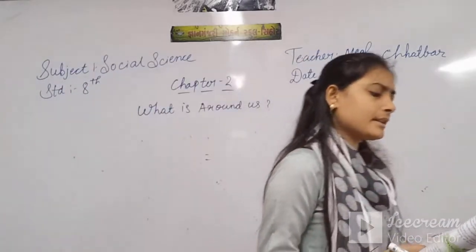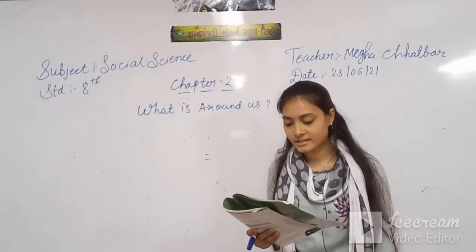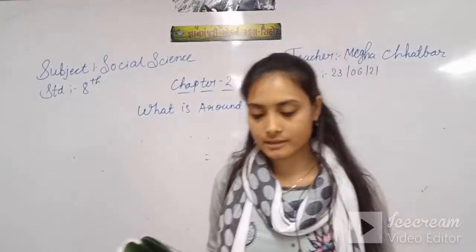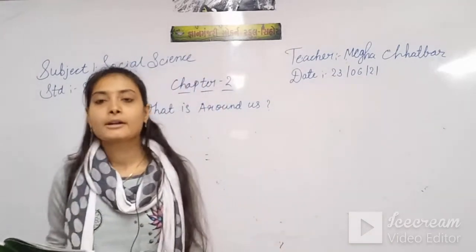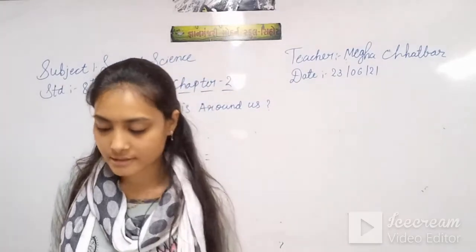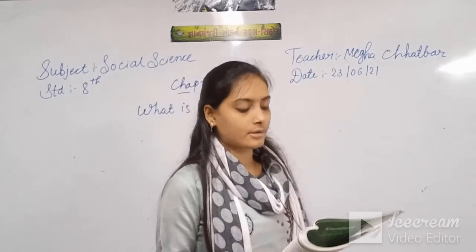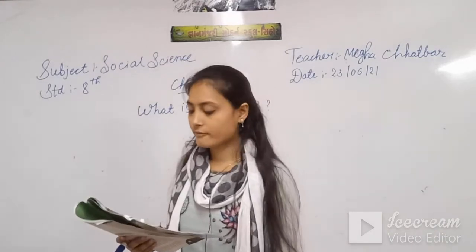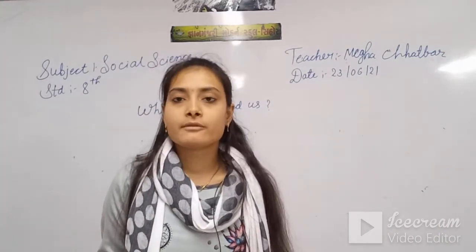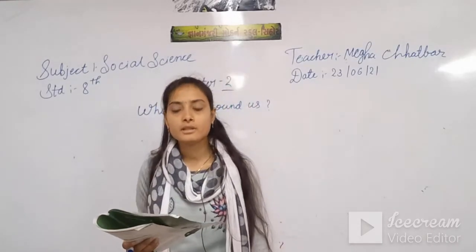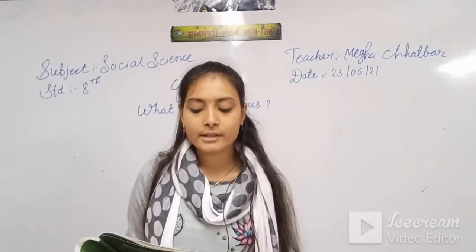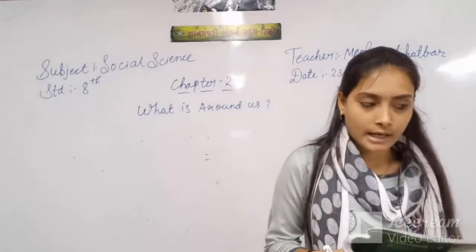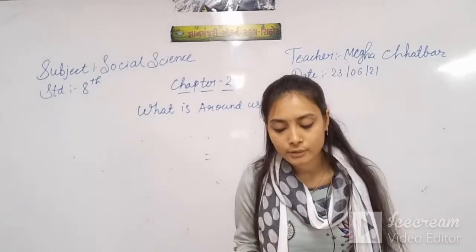It is generally believed that the part of the sun which has been detached after a collision became the earth. At the time of its origin, earth was in the form of a fireball. This fireball started to cool down slowly. Many elements of the earth got transferred into liquid and further into solid form.